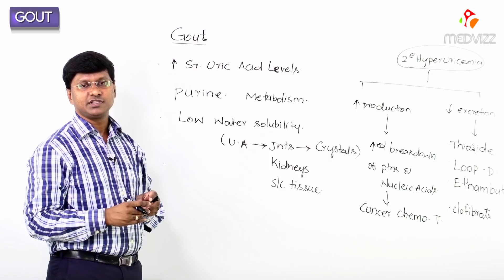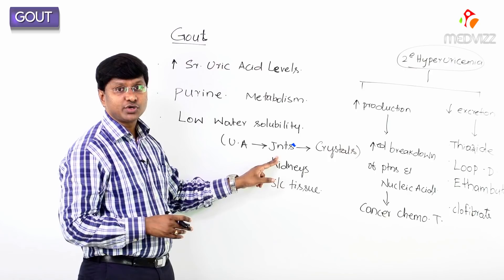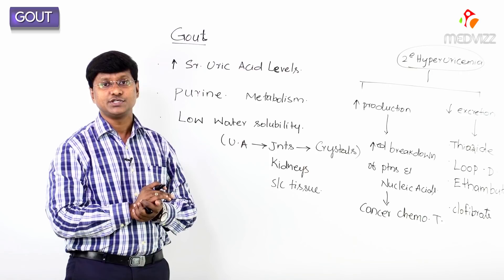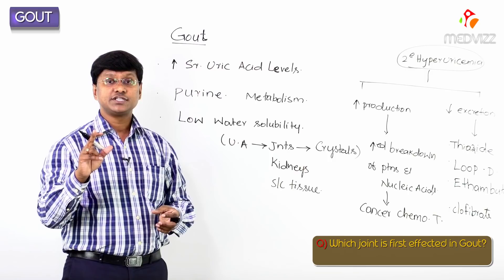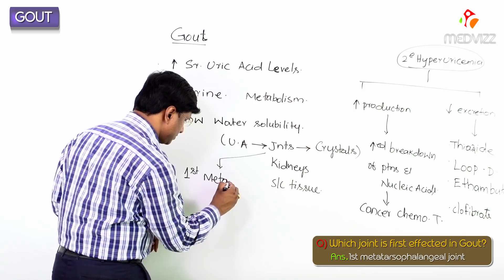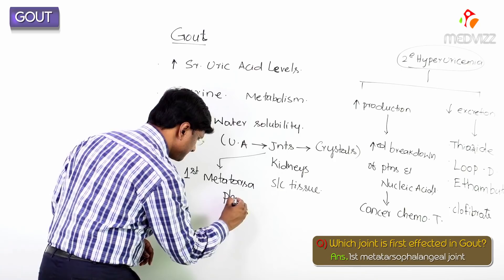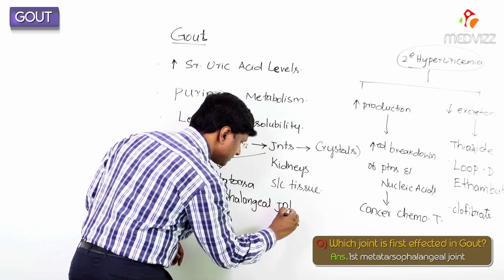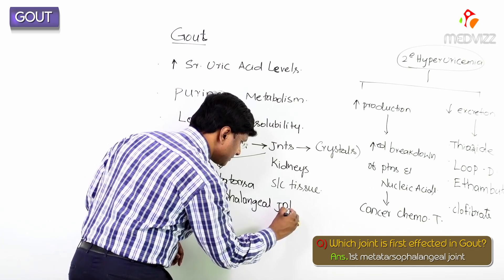This is the basic pathogenesis of gout. These crystals get deposited within the joints and the individual will have very severe pain because of the deposition of crystals within the joint. The joint which is most commonly and first affected is the first metatarsophalangeal joint — this is the first joint affected in patients with gout.